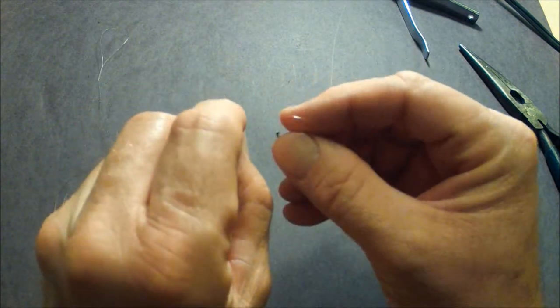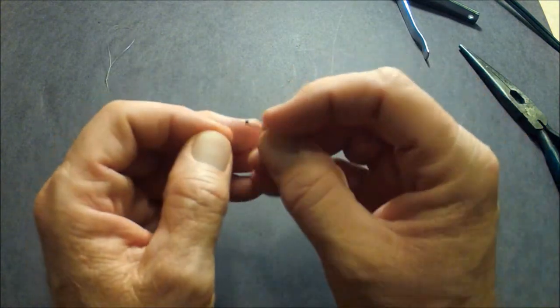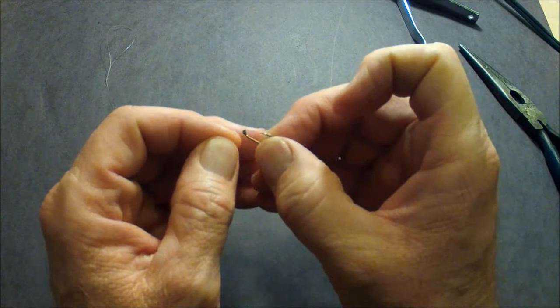So we're going to get started by taking this line and we're going to thread it through the hoop of the hook.